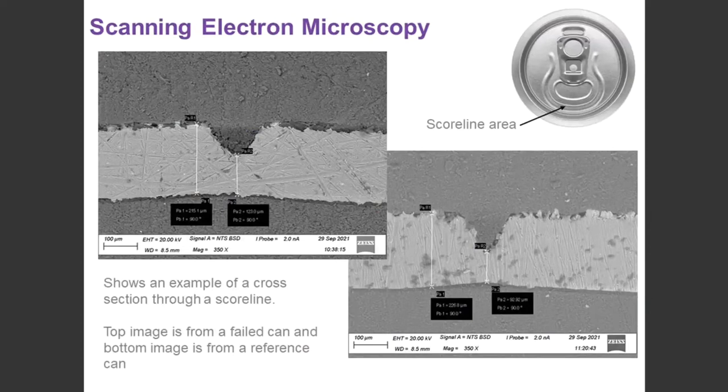Cans opening prematurely along the scoreline is a common defect that we see. This could be that there's an issue with the scoring, or it could be that moisture has actually built up in the scoreline area. Just clarify that the scoreline is this sort of thin line, the part that would sort of crack open when you open an easy end cap. Now, both of these images are taken with our SEM as a cross-section through that scoreline area.